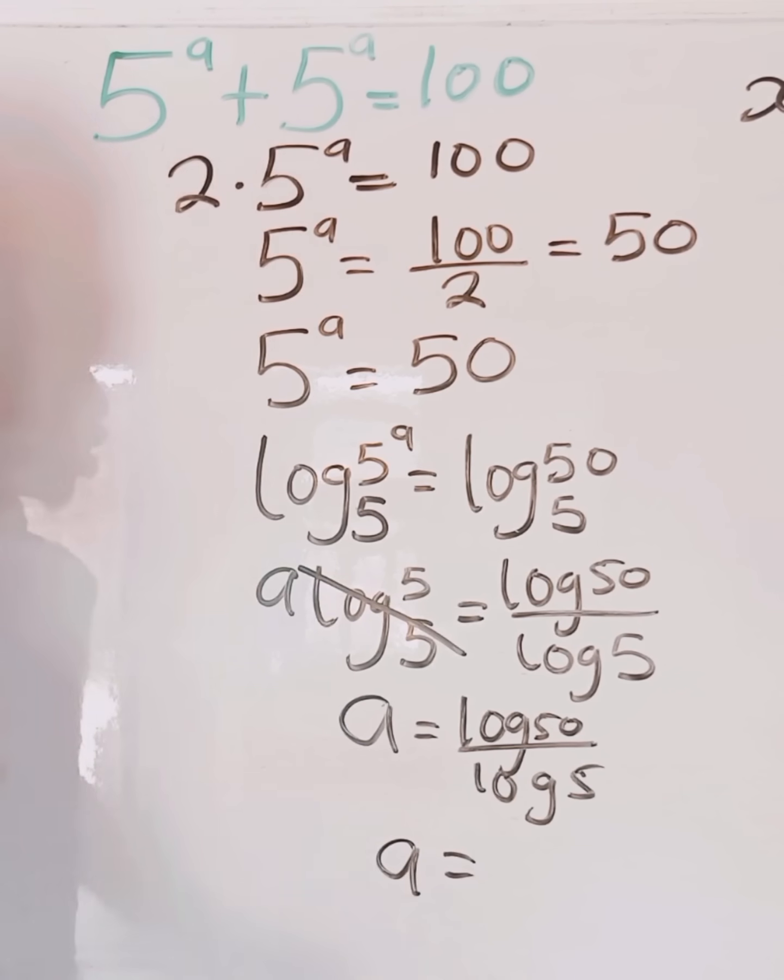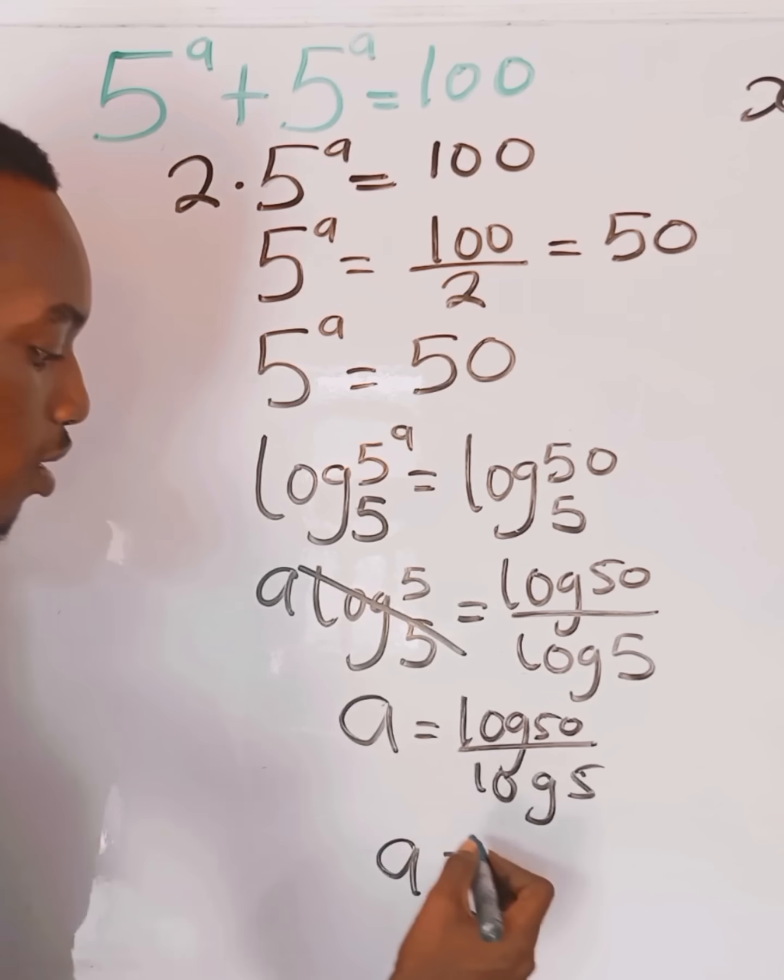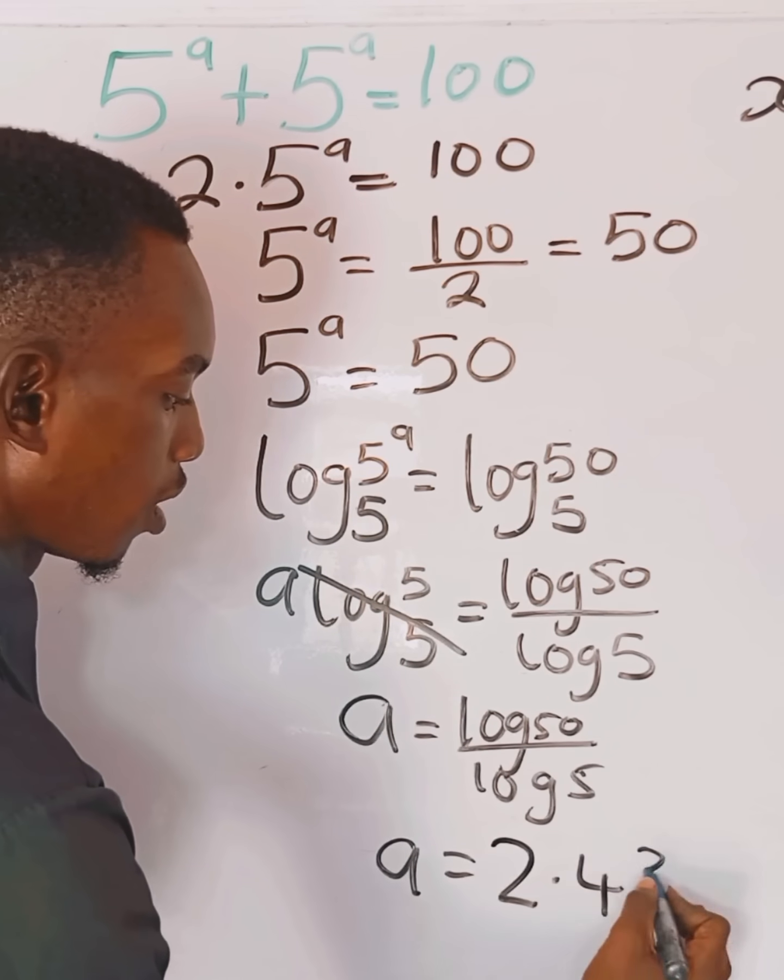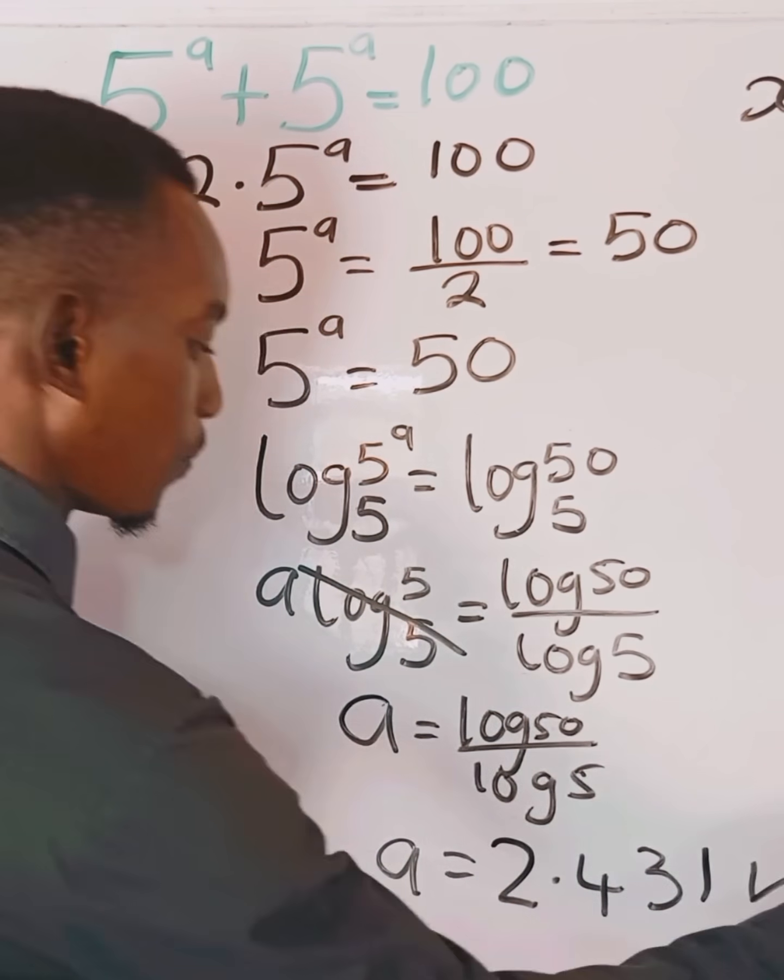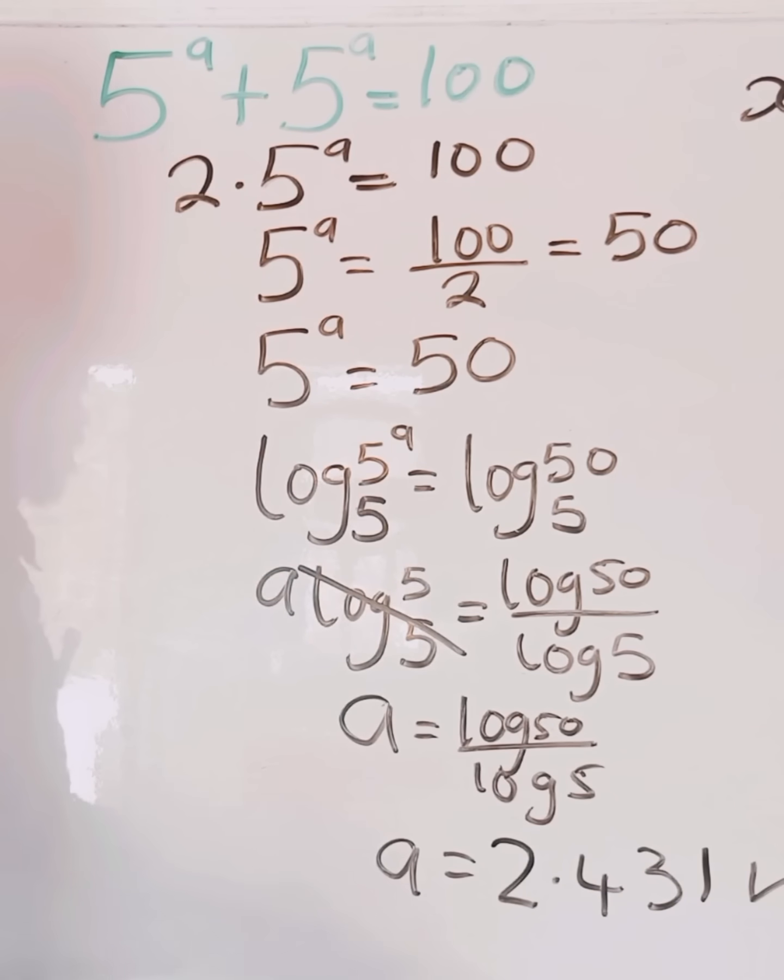So a would be equal to, when you input that in your calculator, approximately 2.431. That's to three decimal places. So that's the value of a, as simple as that.